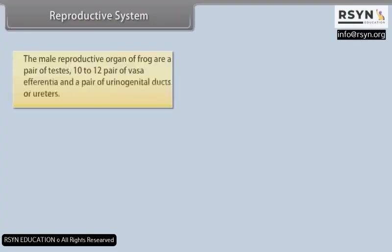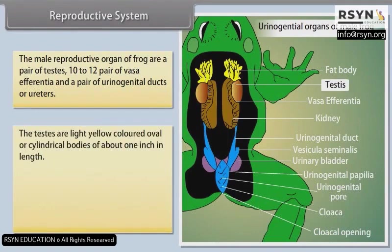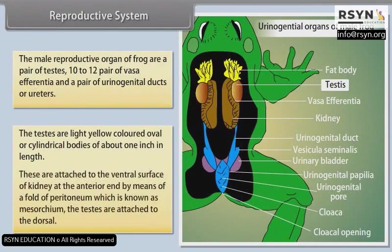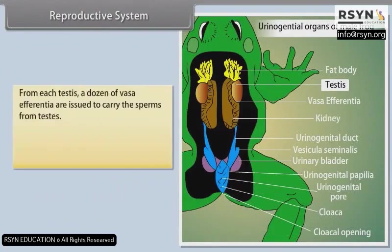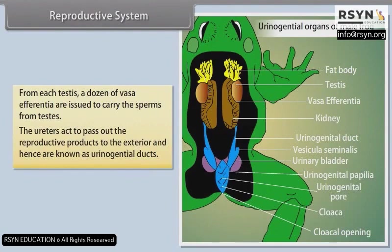Reproductive System: The male reproductive organs of frog are a pair of testes, 10–12 pairs of vasa afferentia, and a pair of urogenital ducts or ureters. The testes are light yellow, oval or cylindrical bodies about 1 inch in length, attached to the ventral surface of the kidney at the anterior end by a fold of peritoneum known as mesorchium. From each testis, a dozen vasa afferentia carry sperm. The ureters act to pass out reproductive products to the exterior and are hence known as urogenital ducts.